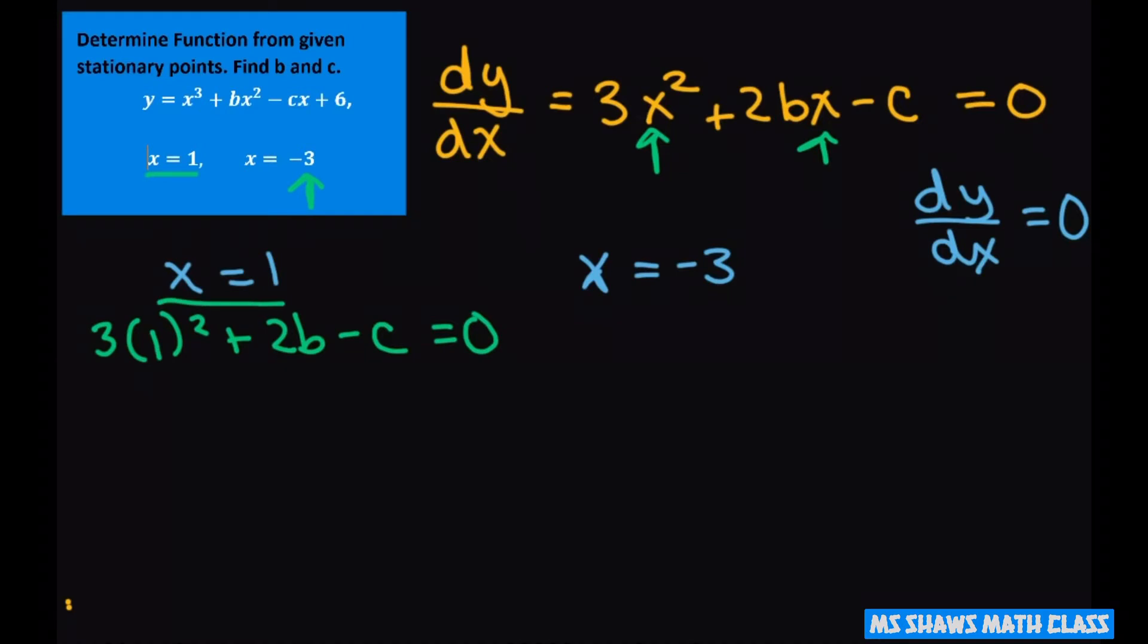That's when x is 1 and when x is negative 3 we're going to get 3 times negative 3 squared plus 2 times negative 3b minus c equals 0.